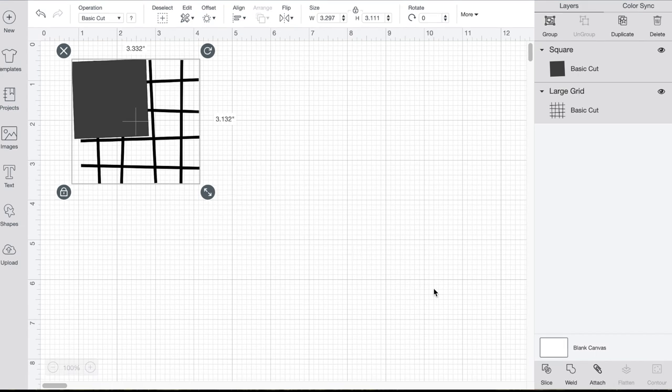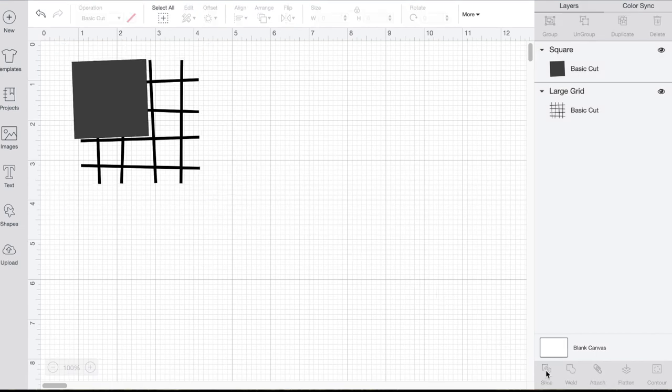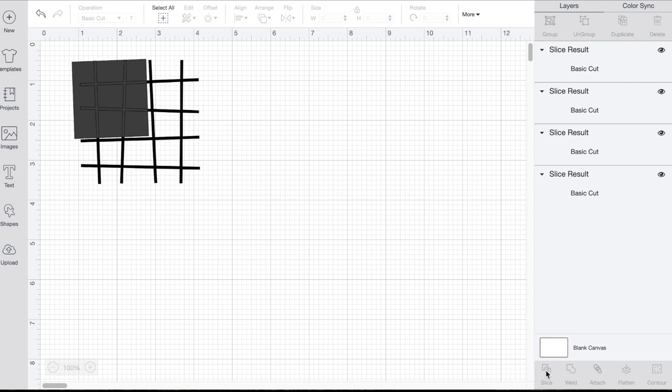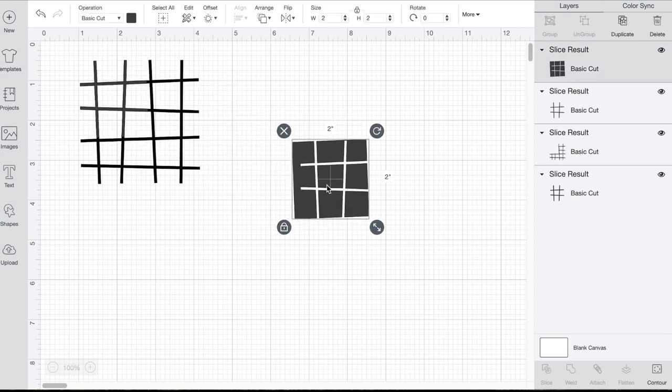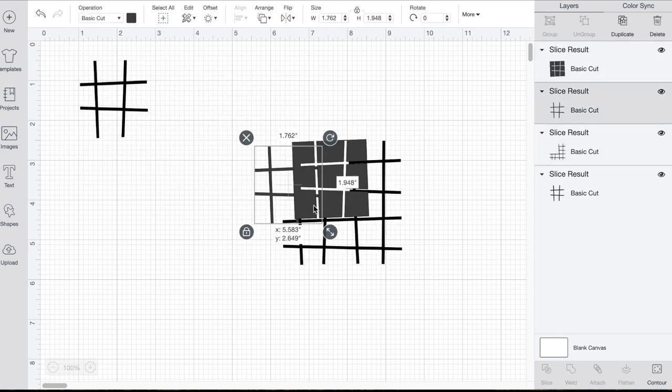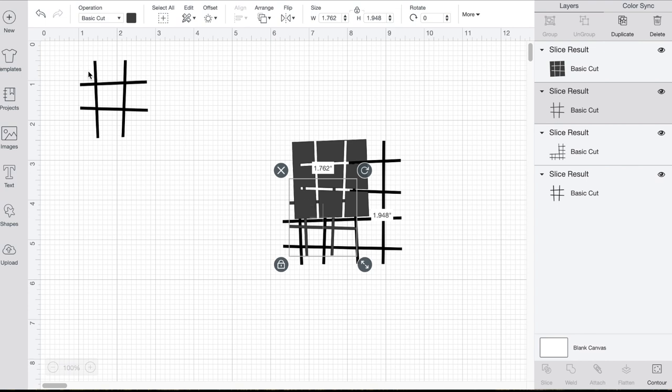Then once I'm happy with that, I'm going to take my cursor and just drag it over top both the square and the grid, and then I'll go down to the bottom right and hit Slice. And this is where the magic happens. You can see that it's sliced everything away, so you can drag off those other parts and now we've got our perfect grid underneath.